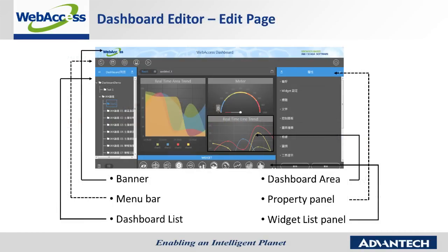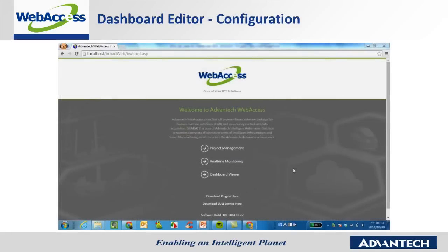Here you can see the dashboard editor page overview. Users can change the banner to their preference. In the menu bar, users can perform basic functions such as saving pages and creating new pages. The dashboard list shows the created dashboard pages. On the right side, users can edit the content of the dashboard in the dashboard area. The property panel allows setting of widget properties.